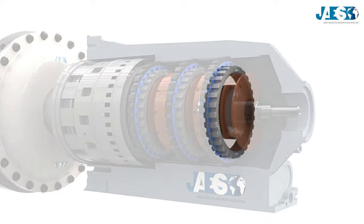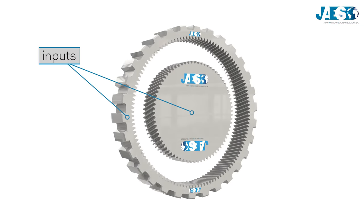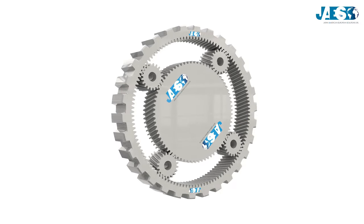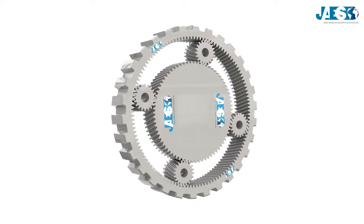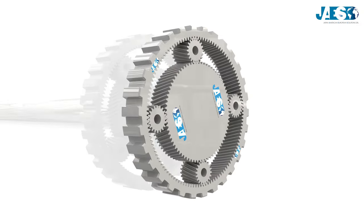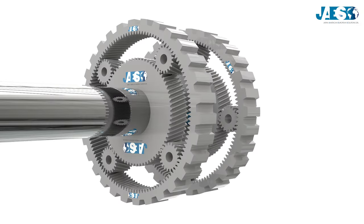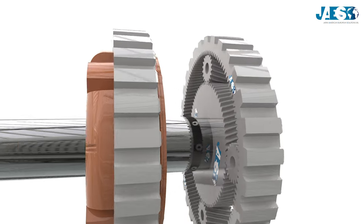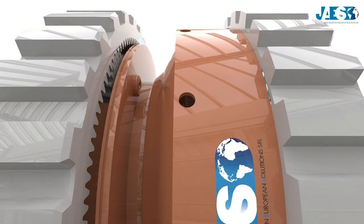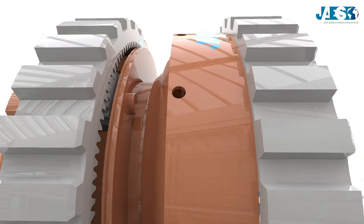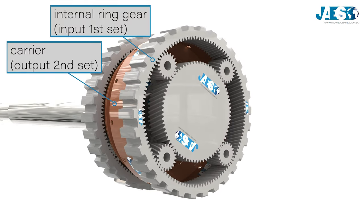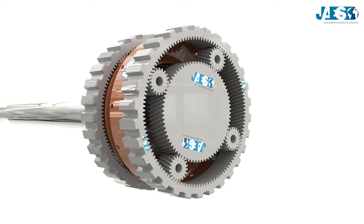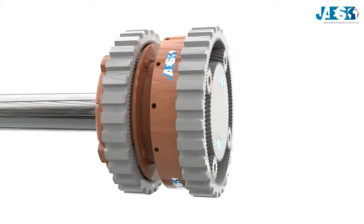In this planetary gear set arrangement, we can notice that there are two inputs and one output. If we vary these two input speeds, we can achieve a different output speed. By adding another set, we can notice that the carrier, which is the output of the second set, is connected to the internal ring gear, which is only one part of the inputs of the first set. This coupling forms a simple automatic two-speed transmission.